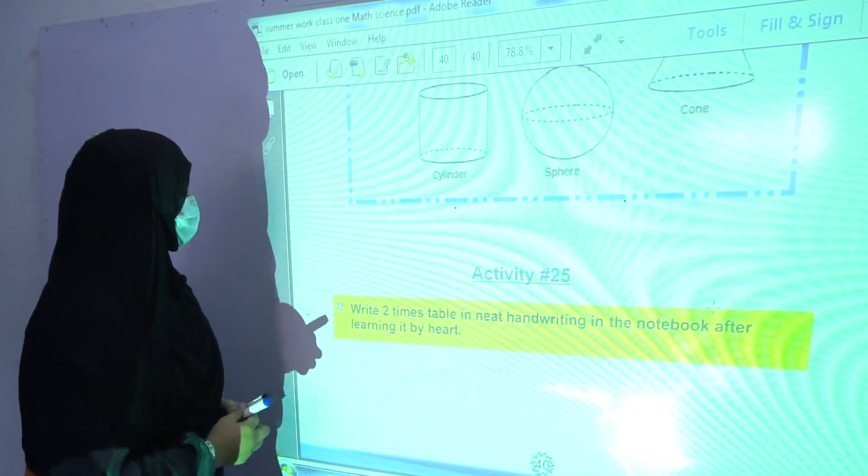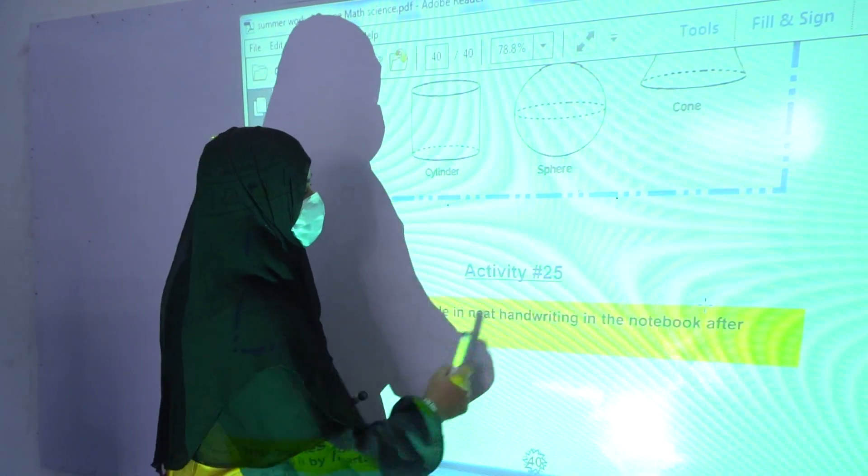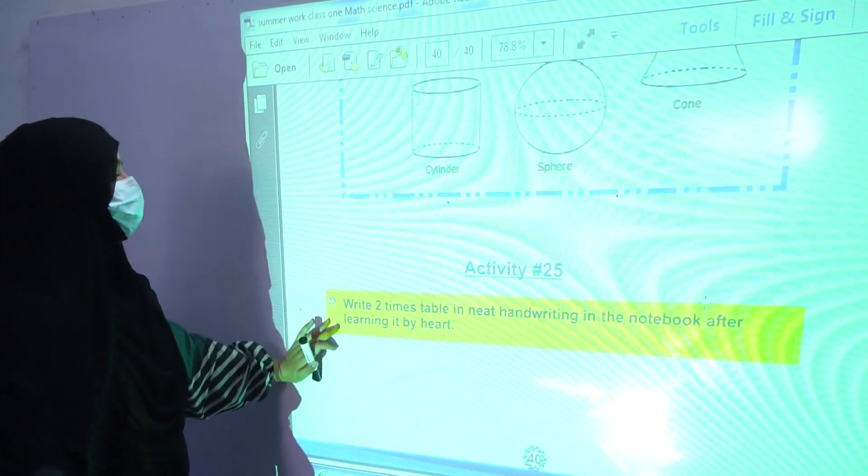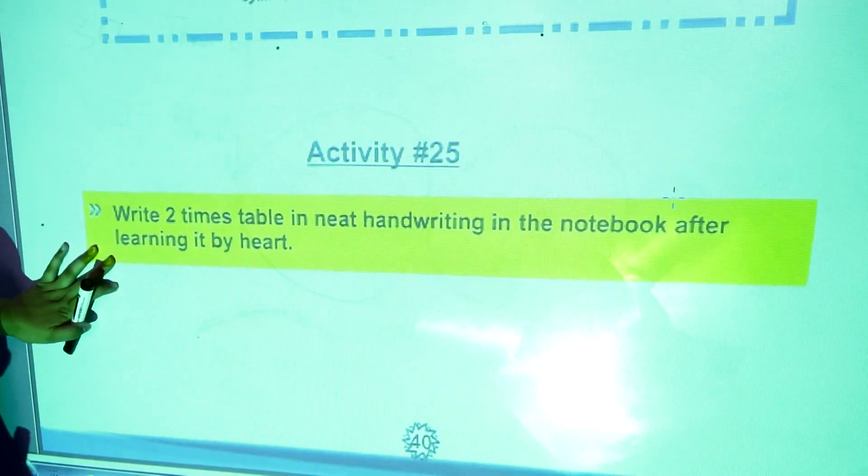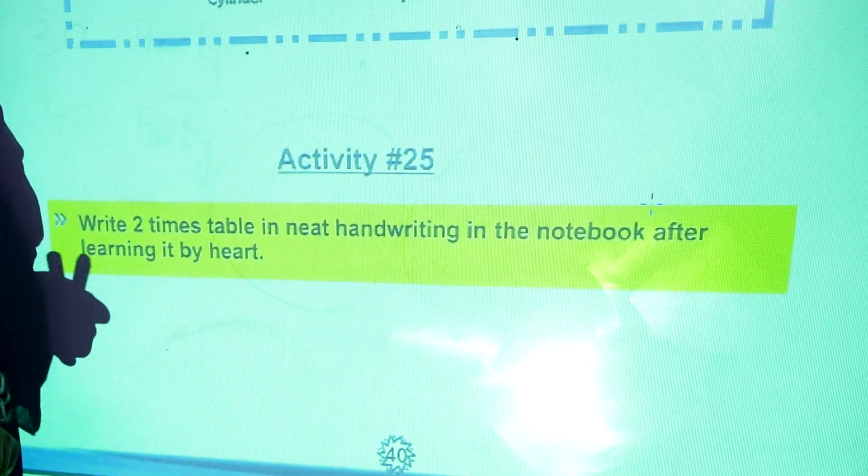Activity number 25, write 2 times table in neat handwriting in the notebook after learning it by heart. You have to learn the 2 times table and then you will write in your notebooks.